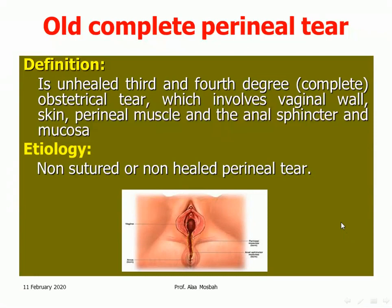The old complete perineal tear is an unhealed third and fourth degree obstetrical tear, which involves vaginal wall, skin, perineal muscles, anal sphincter, and the mucosa of the anal canal and rectum. Extension of the perineal tear occurs from the vagina to the perineal body and the external anal sphincter. It occurs due to non-sutured or non-healed perineal tear.